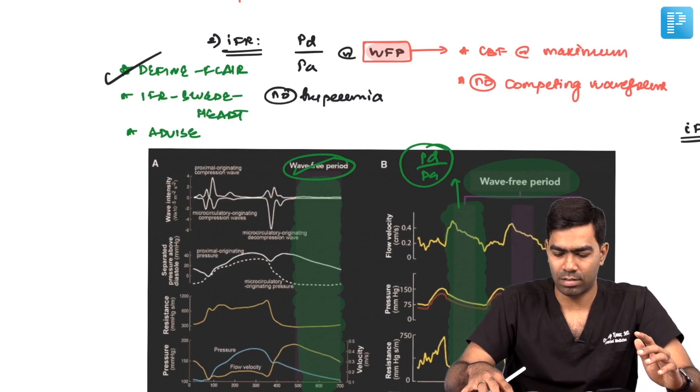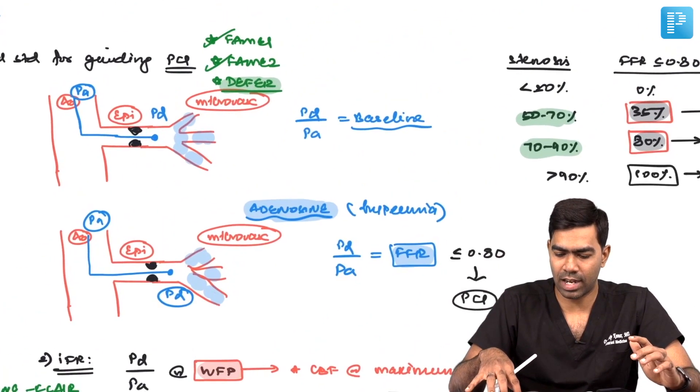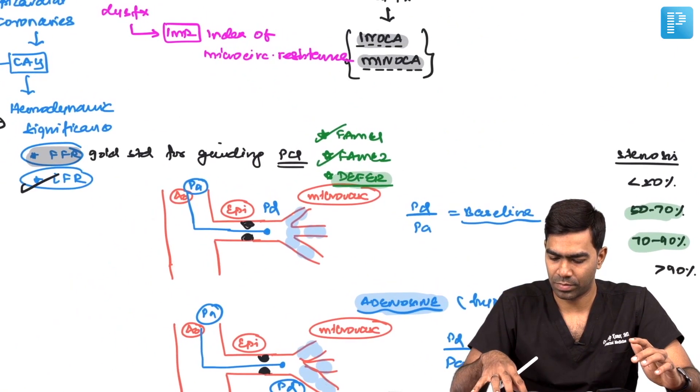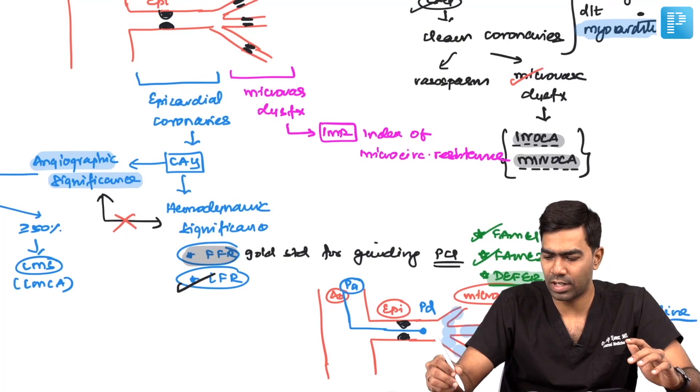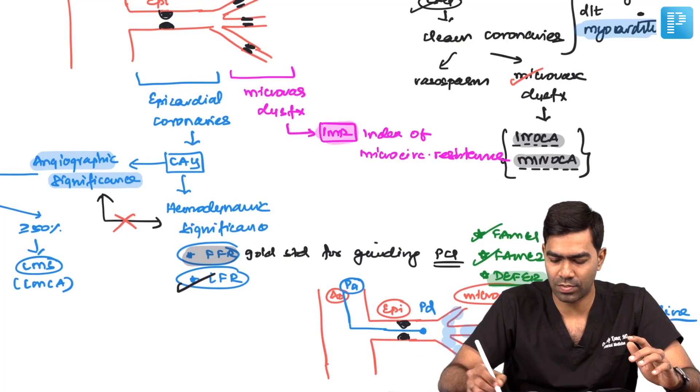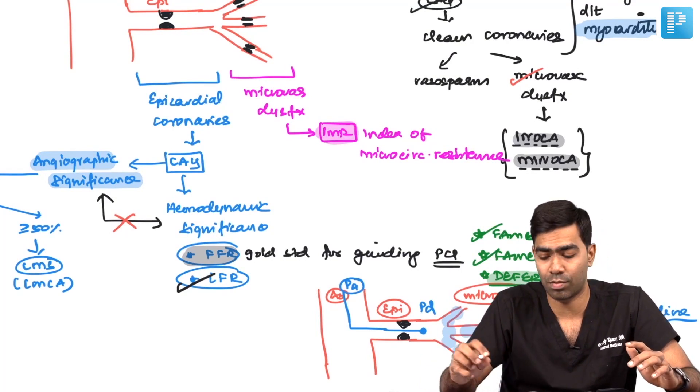After all these things, we have certain indices that can detect microvascular dysfunction. One index we discussed already is the IMR, the index of microvascular resistance.